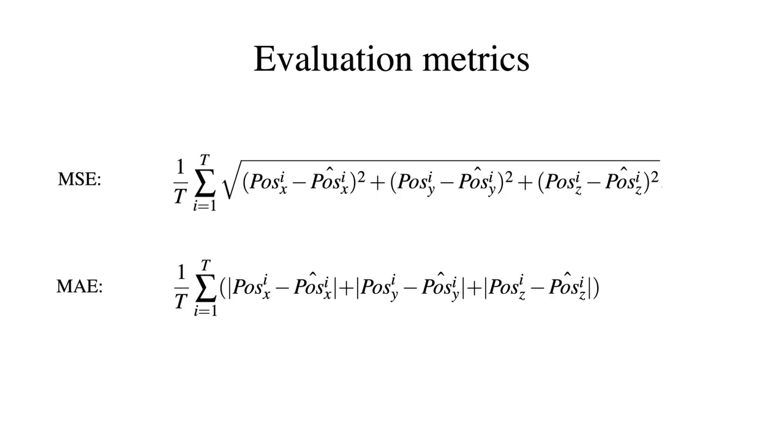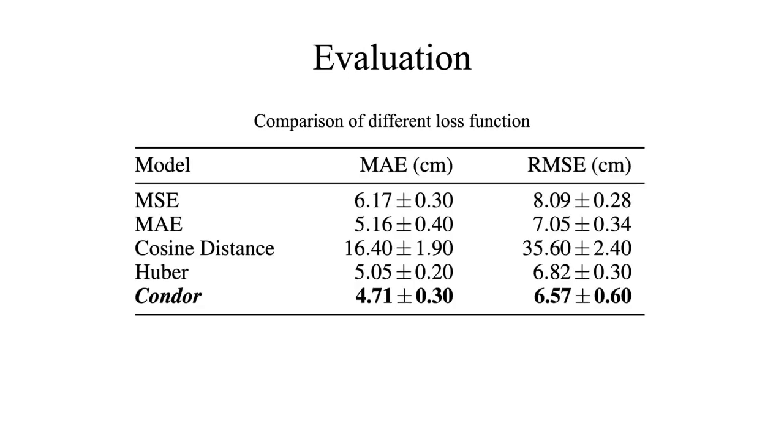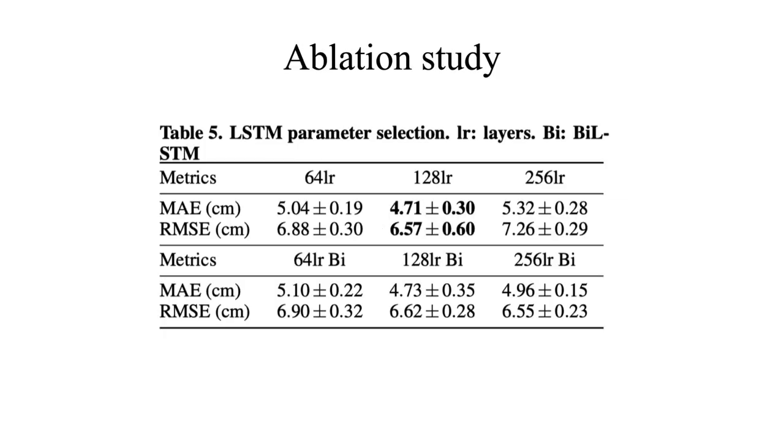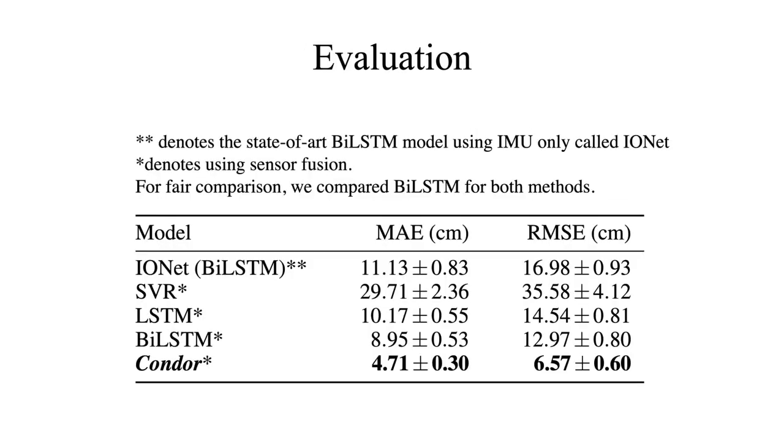We use two evaluation metrics: the mean square error and mean absolute error. Here's the evaluation result. For different loss functions, we see that our proposed loss outperforms the mean square error, mean absolute error, cosine distance separately, and combined things as well. For model comparison, we compare the state-of-the-art BiLSTM model using IMU only called IONet. For fair comparison, we also compared such model into the sensor fusion case and other methods as baseline such as SVR and LSTM. We can see that Condor outperforms other methods and could reach 6.57 centimeters error.